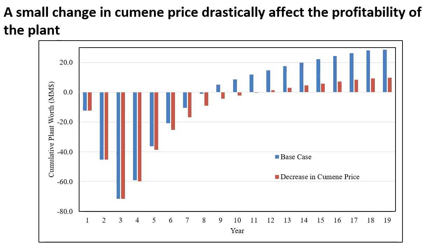A small change in the cumene price drastically affects the profitability of the plant. The cumene price was decreased from $0.42 per pound until an ATROR of 15% was achieved, reaching $0.409 per pound. This decrease drastically reduced the cumulative plant net worth by $18.8 million and added two years to pay off the plant. This large impact is due to the plant capacity of 400 million pounds of cumene per year. The plant is not recommended to be built if the cumene market is expected to decrease, such as if another company begins selling cumene and the price drops due to increased supply.